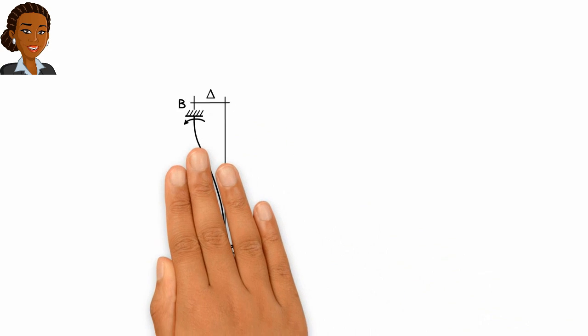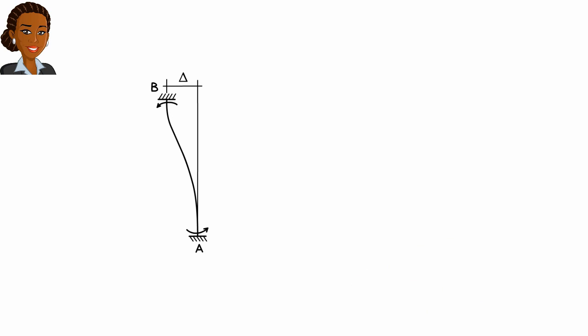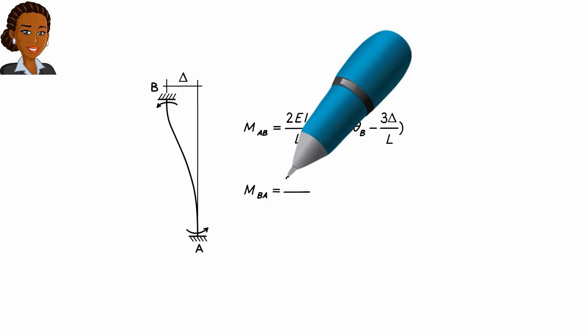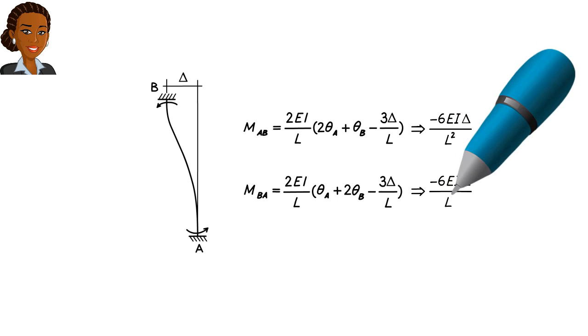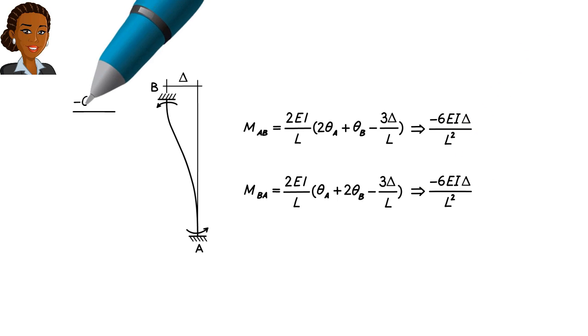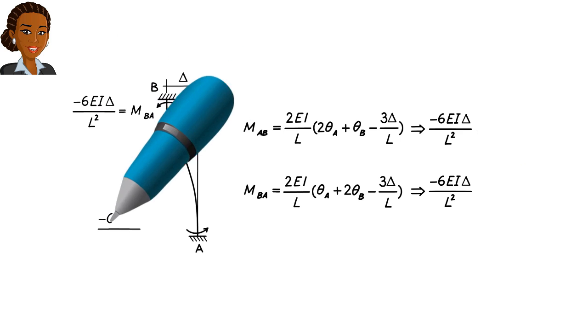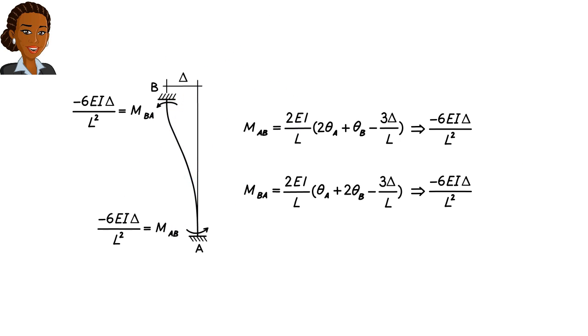Here they are for member AB. If the member is assumed to be fixed at both ends, in other words, if theta A and theta B are zero, then the two equations reduce to these. These are the bending moments at the fixed ends of the member, or our fixed end moments.